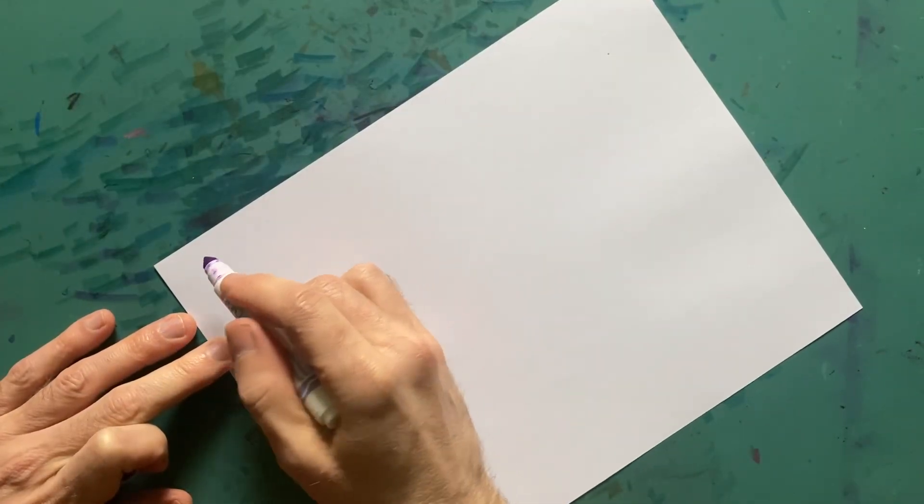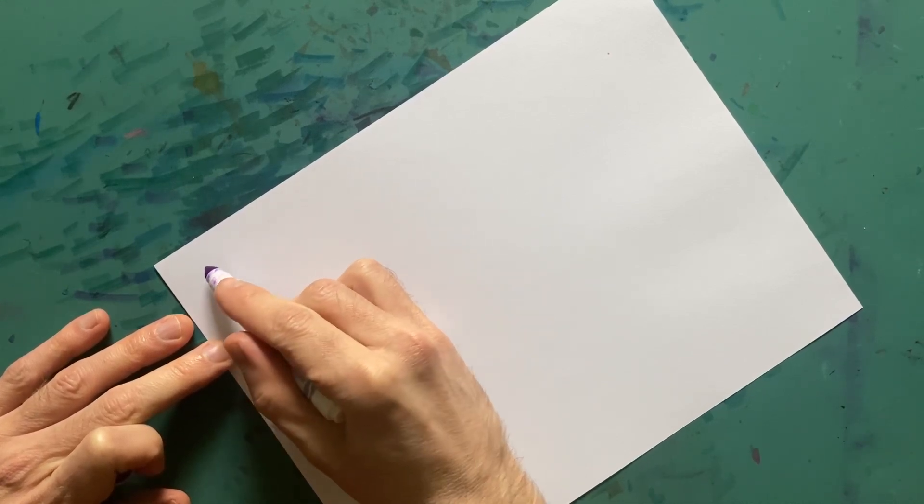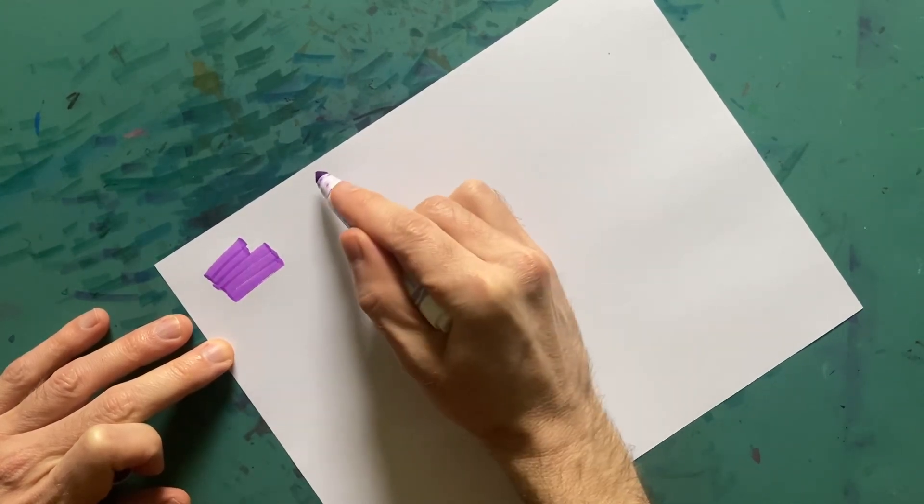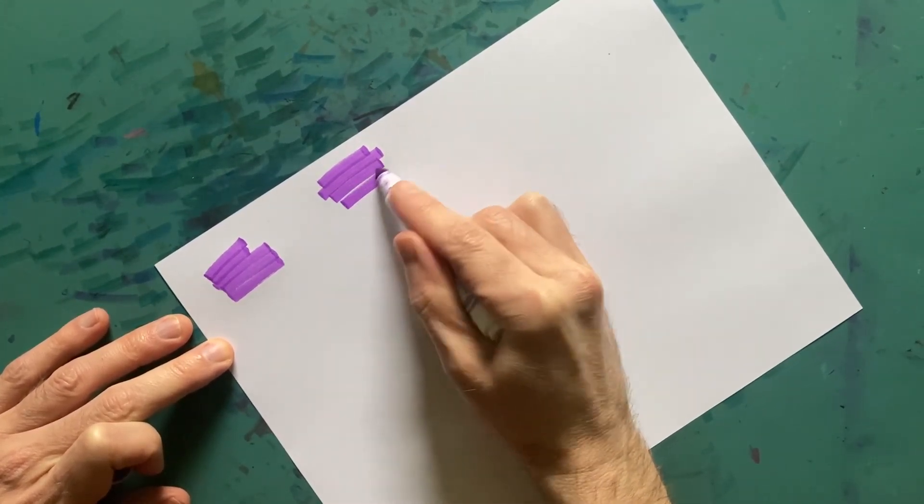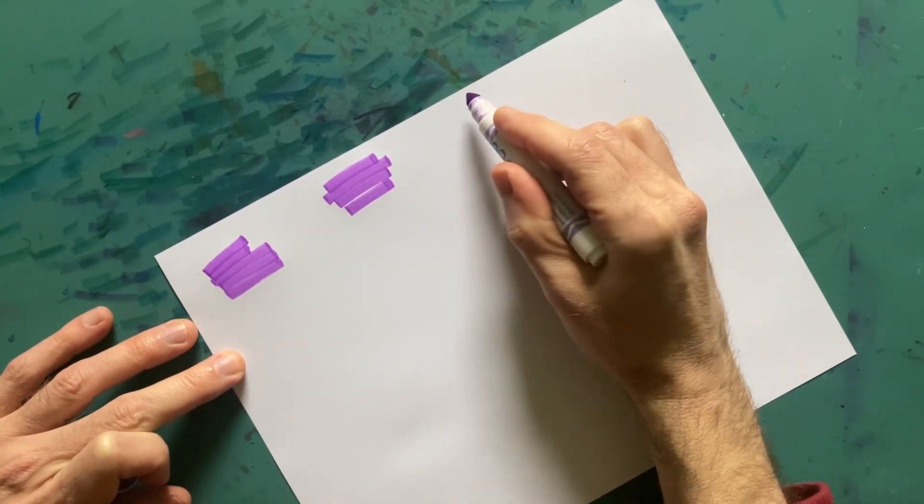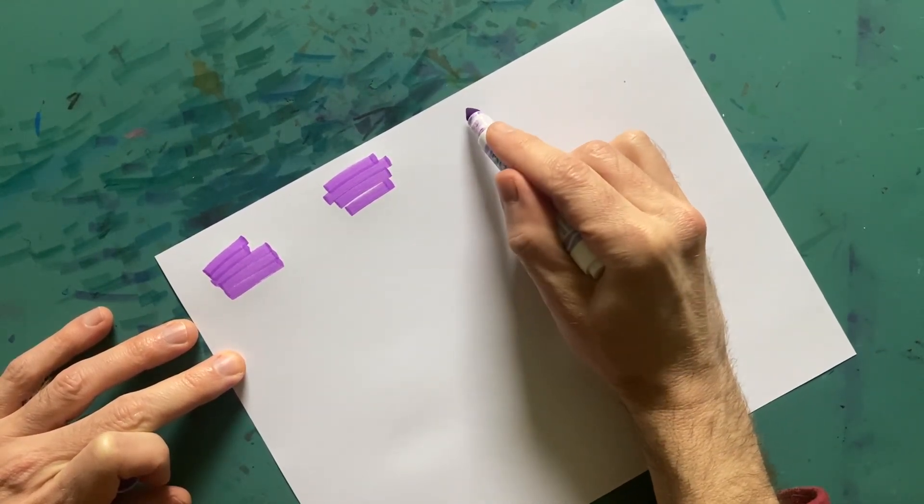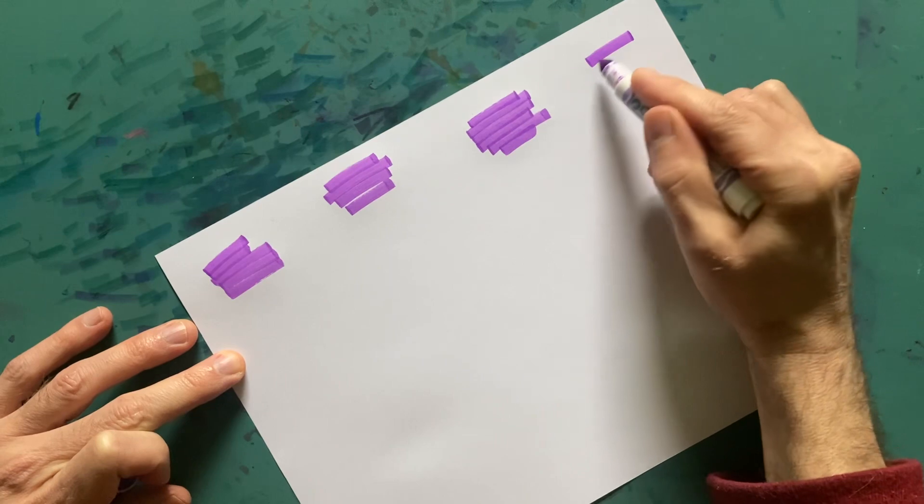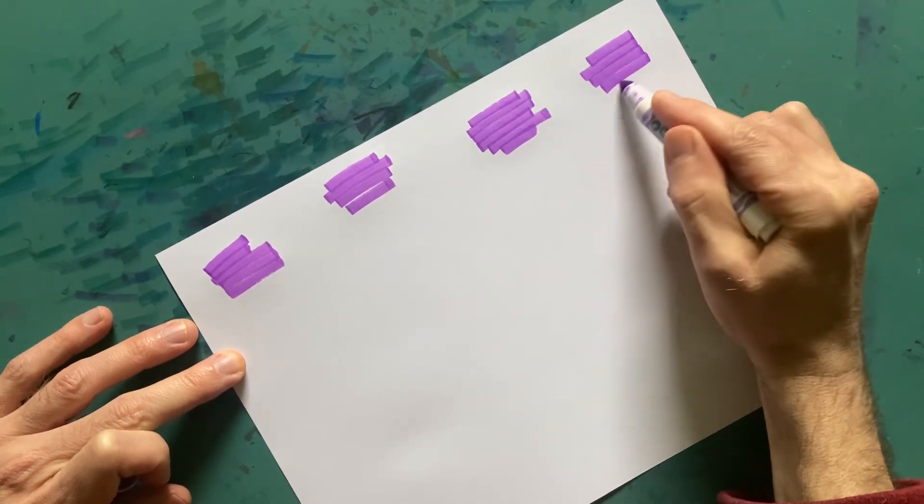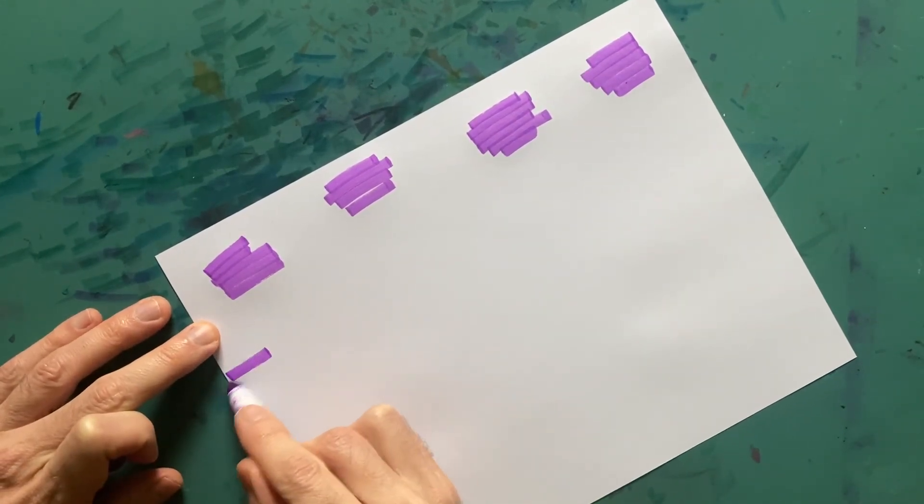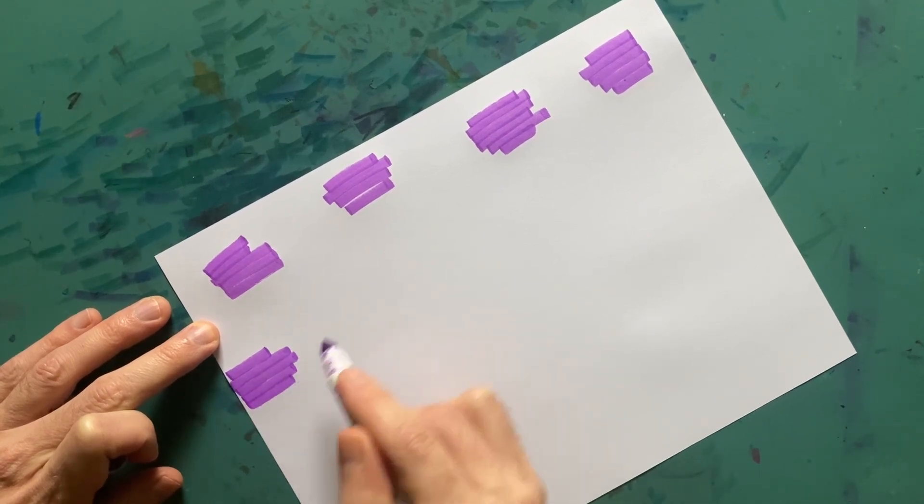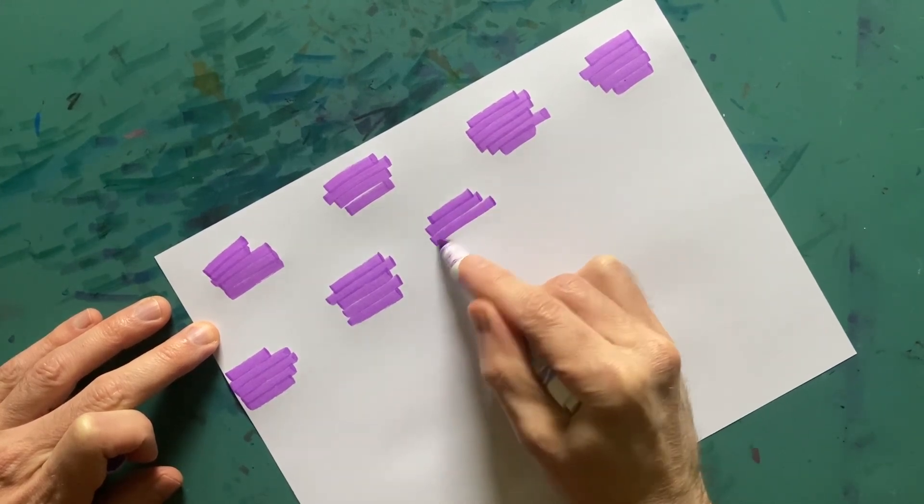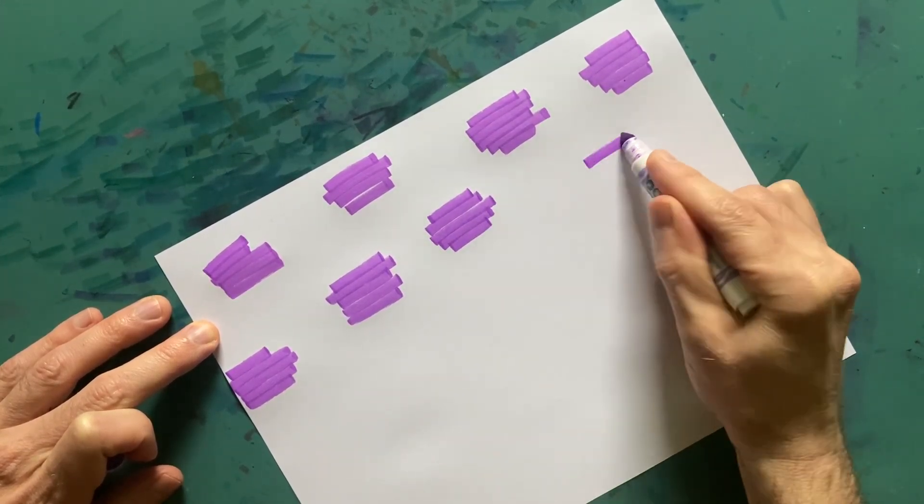So glad you could join me today. We're going to draw a beautiful picture. I hope you guys will follow along because you can add this to your sketchbook and you'll have a wonderful page of art. Get your markers out. We're just starting with this beautiful light purple color today. We're just making kind of squares with just simple brush strokes. Make sure you watch this all the way through so you can see how we do this.